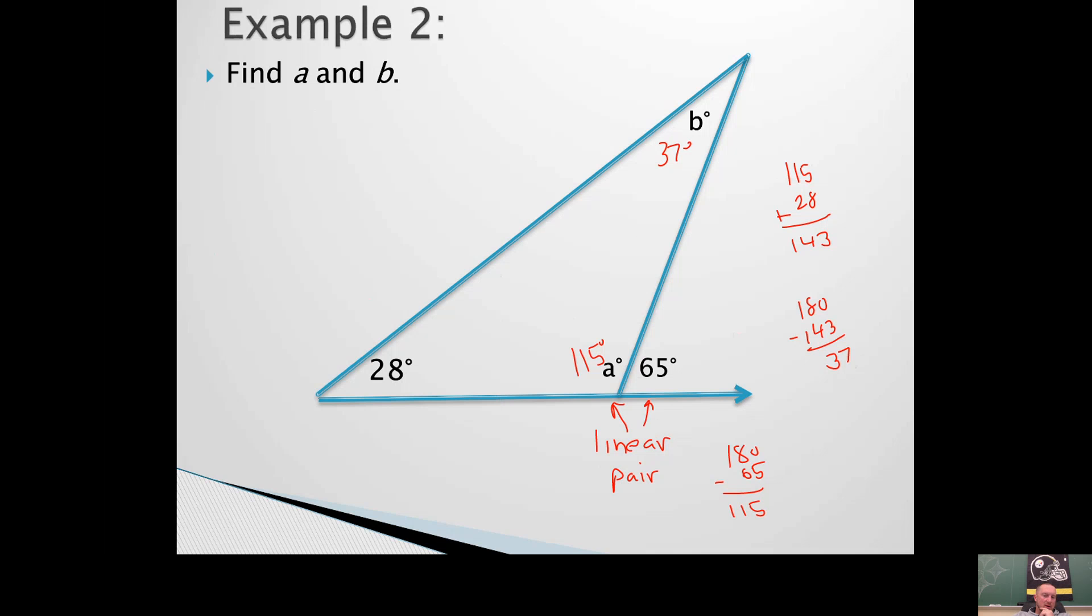You can classify this triangle. We know all three angles in it now, and they're all different. So it's a scalene triangle. One's bigger than 90, so it's obtuse.